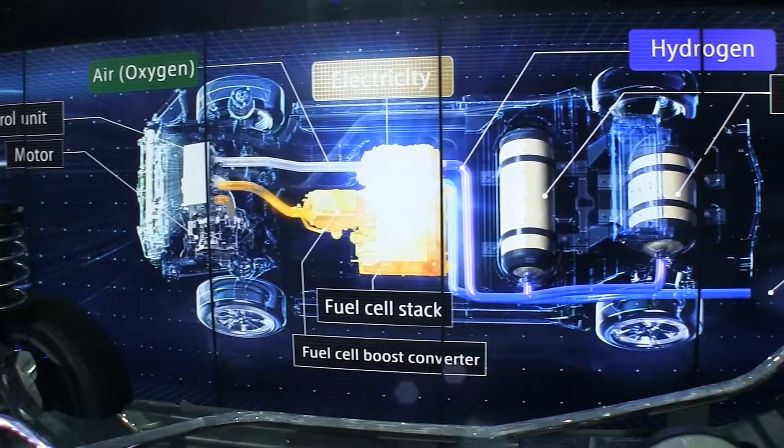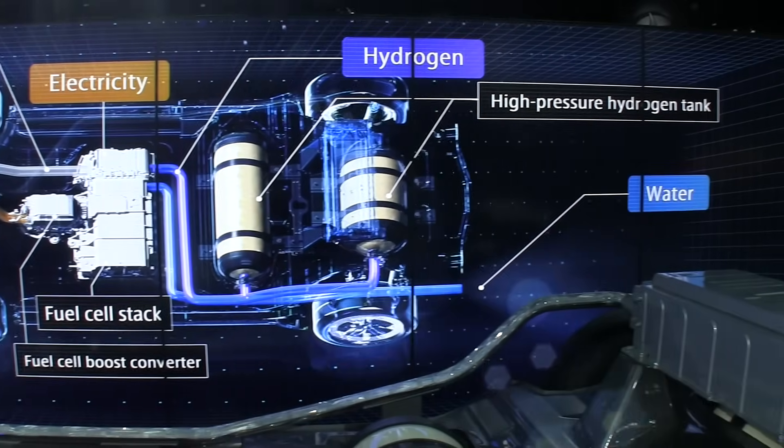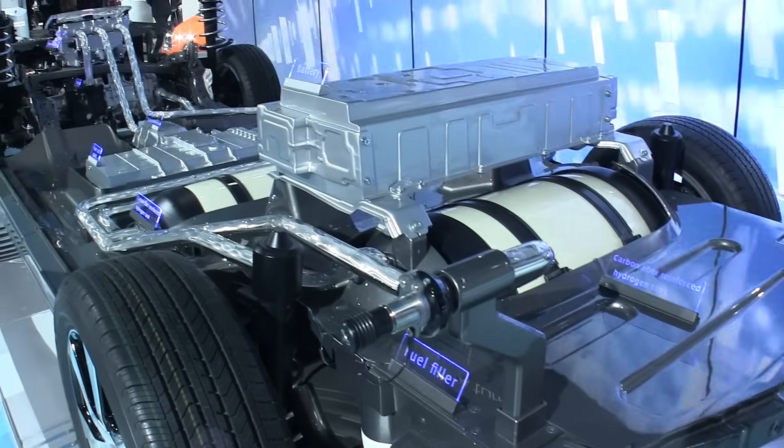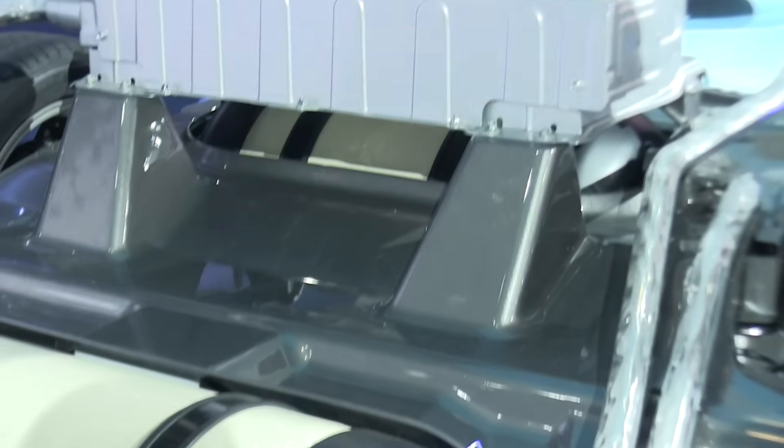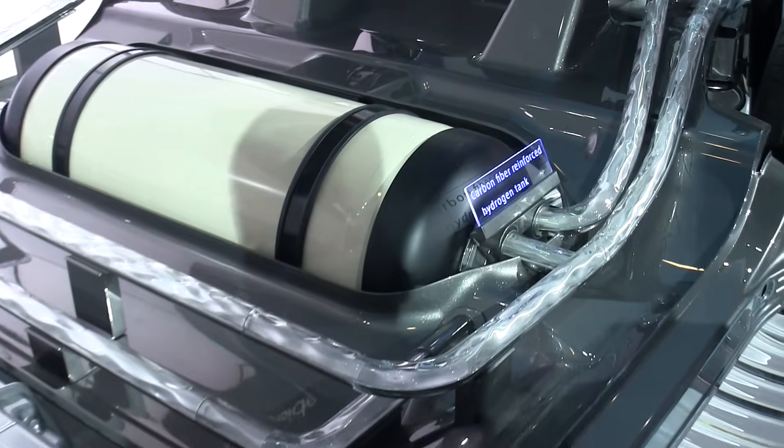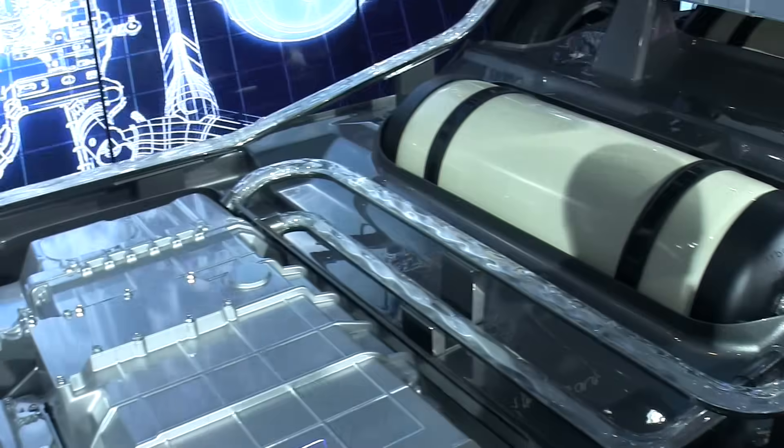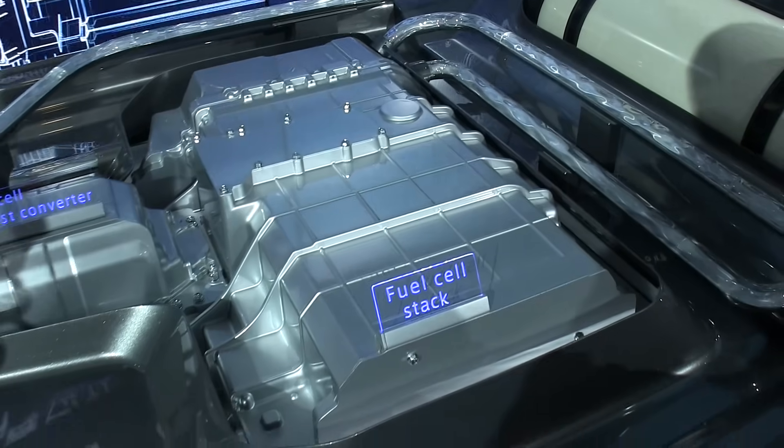So now let's check out the architecture of the Toyota Mirai and look at how they've implemented this in order to power a vehicle. So you'll notice that they actually have two hydrogen tanks. And what these will do is send their hydrogen to the fuel cell stack. Now the fuel cell stack is simply a lot of these individual fuel cells stacked side by side.